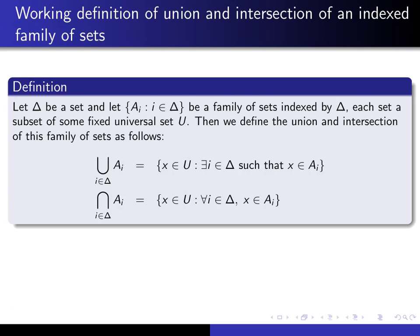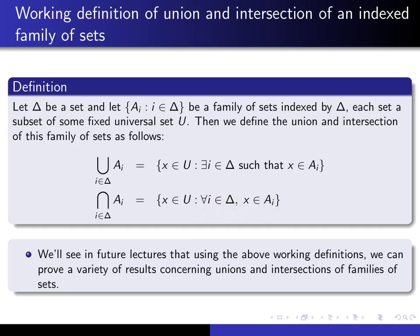Now that we understand what we mean by an indexed family of sets, let's give ourselves a generic indexed family where delta is the indexing set. It's very easy to write down what we mean by the union of all sets A in this family: it's the set of all X in our universal set such that there exists an index I in delta such that X is an element of A sub I. And the intersection is the set of all X such that for every I in delta, X is an element of A sub I. In future lectures, using these two basic working definitions, we can prove a great variety of results concerning unions and intersections of families of sets.